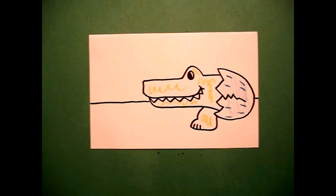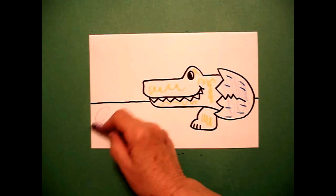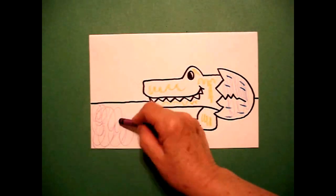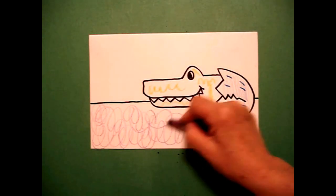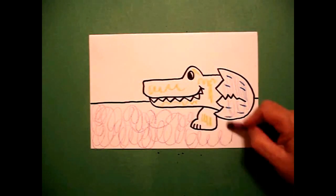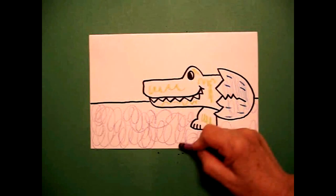But finally, I'm going to do a background and a foreground. On the foreground, which is where he's sitting or standing, I'm going to just do loop-de-loops with a purple crayon all the way across just to give it some texture.